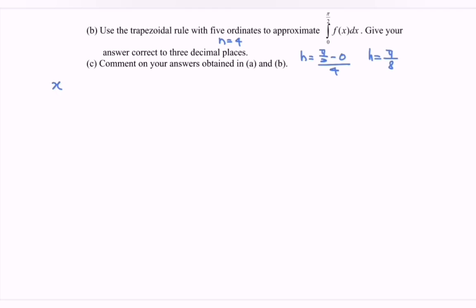So we have x. We have x_0, which starts from 0. x_1, we have π/8. x_2, we have 2π/8, or we can say π/4. x_3, we have 3π/8. x_4, we have 4π/8, or we can say π/2.